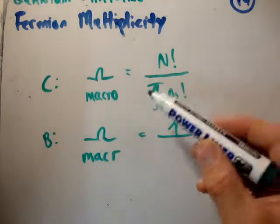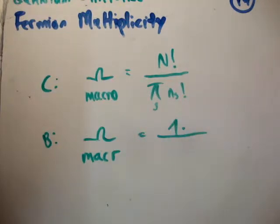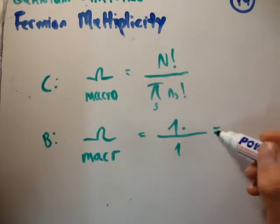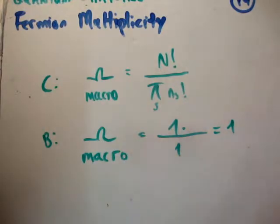So that N factorial becomes one. And for the same reason, the pi n_s factorials also becomes one. Therefore, the macroscopic description for bosons is one.